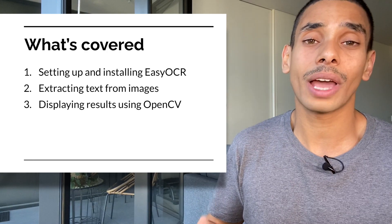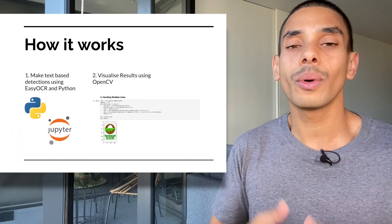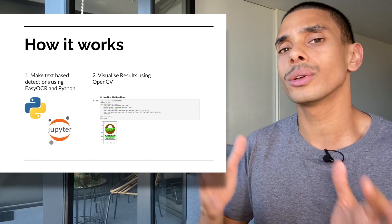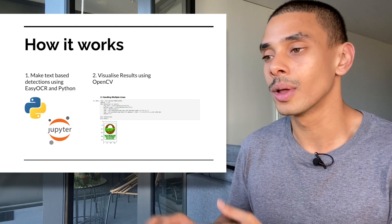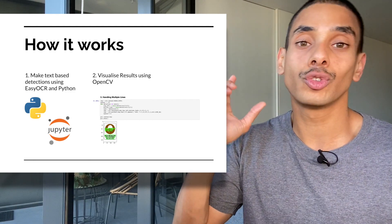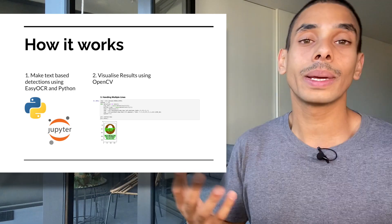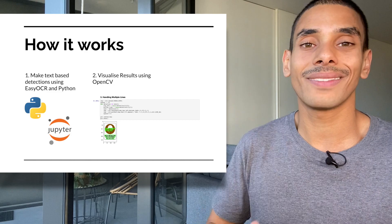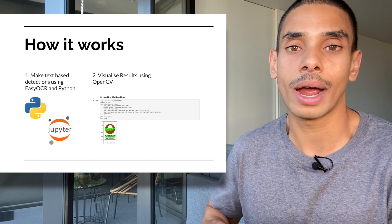To perform our OCR we're going to be using the EasyOCR library, which is powered by PyTorch - a deep learning library similar to TensorFlow. We're going to be making our detections inside of a Jupyter notebook coded in Python, and when we visualize our results we'll use OpenCV to overlay our text on the image.